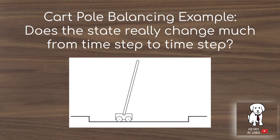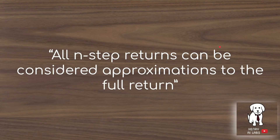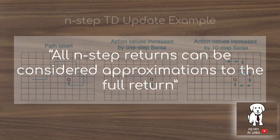Extending TD learning from one-step to n-step look-aheads can save a lot of computational efficiency. For example, in a cart-pole balancing task, the state doesn't really change much from one time step to the next, so you don't need to update the value function for every millisecond-level change. The generalized n-step TD target accumulates rewards up to step n, then adds the discount factor raised to the power n times the value estimate of the resulting state. All n-step returns can be seen as approximations to the full Monte Carlo return, but with less variance.